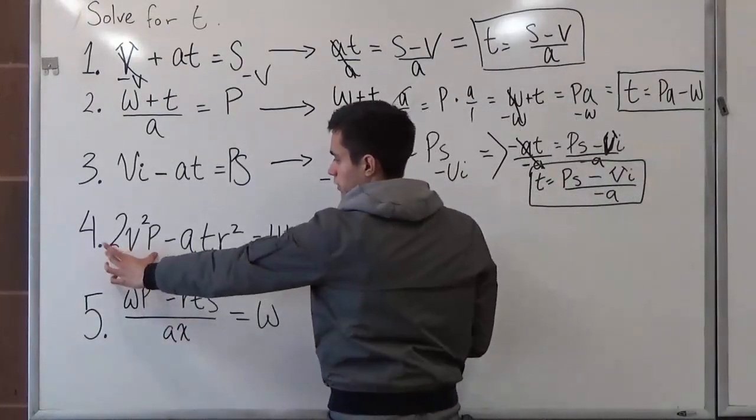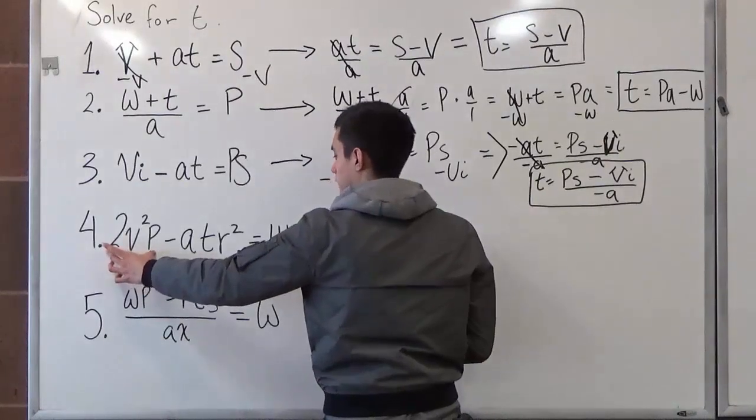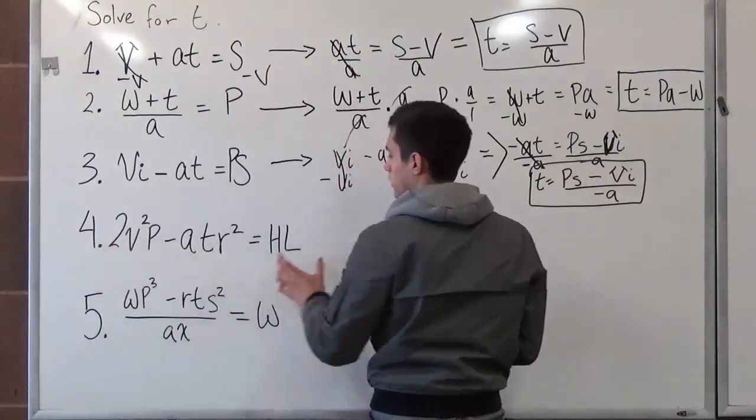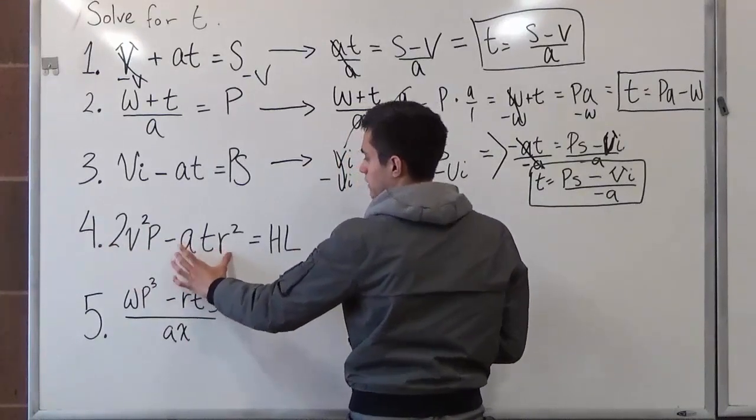So here, we want to treat 2 times v squared times p as a whole, and we want to move it over to this side so that then we have this whole by itself.